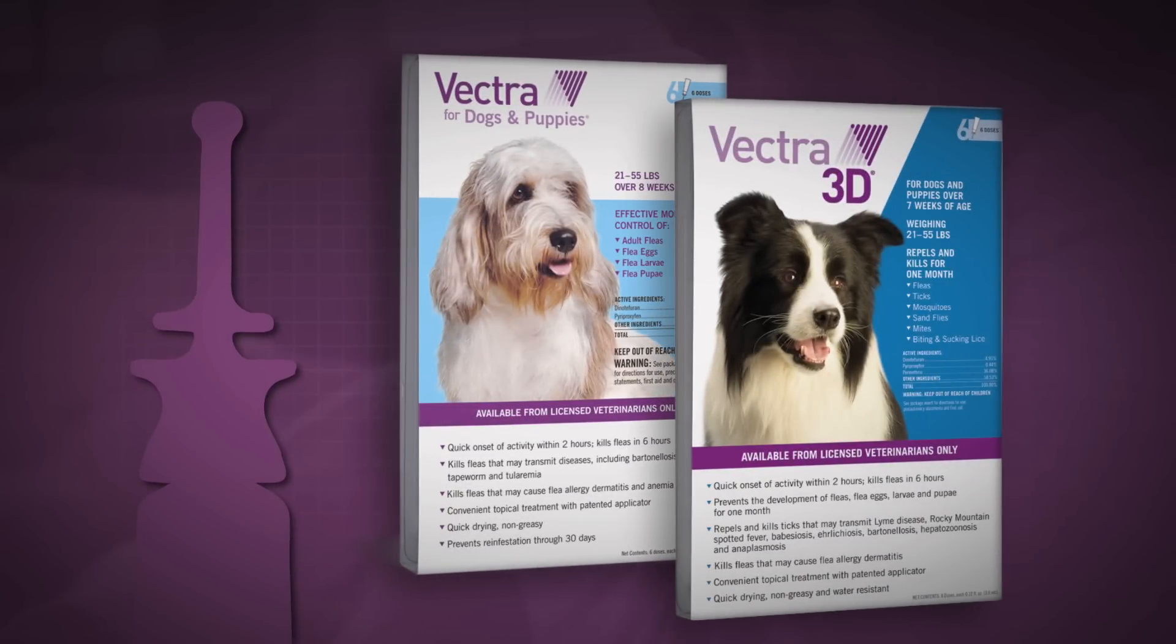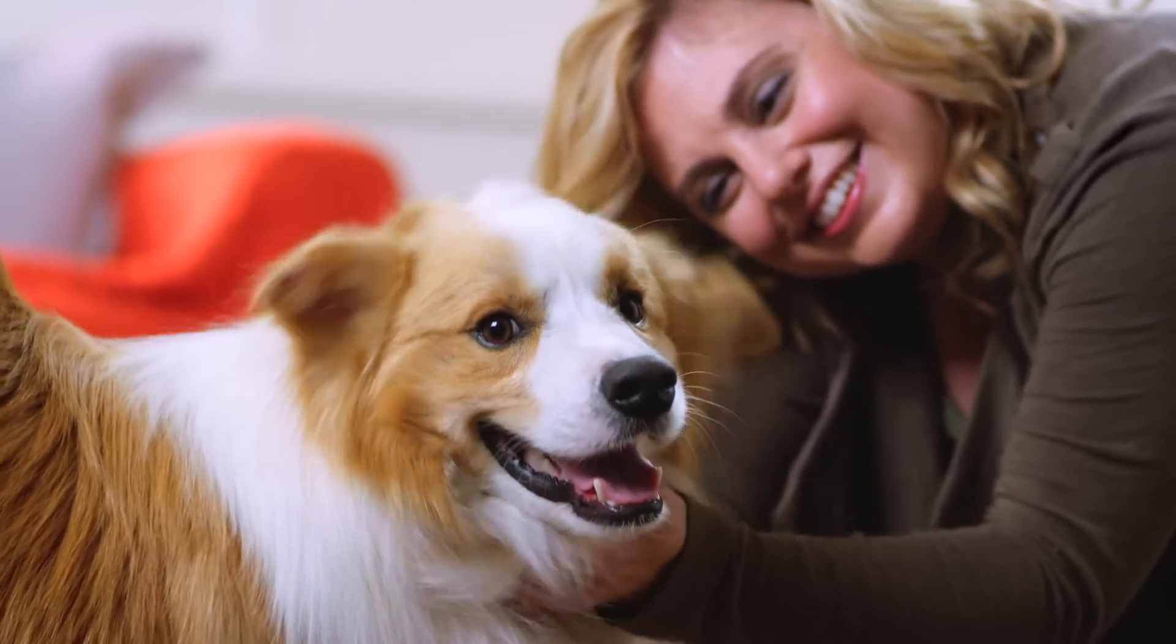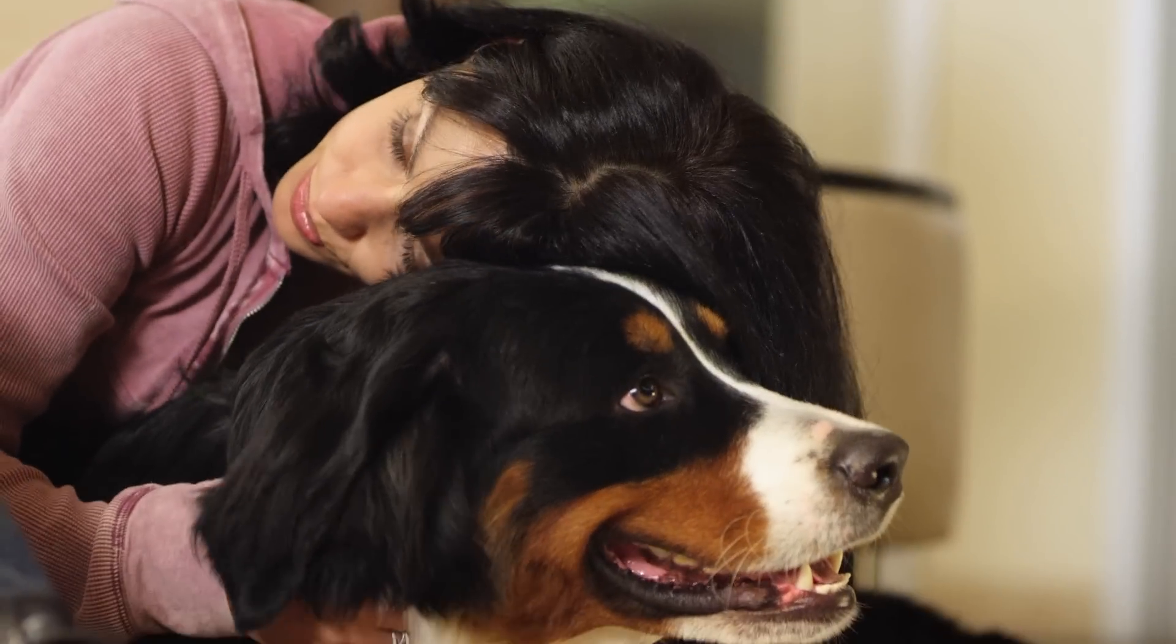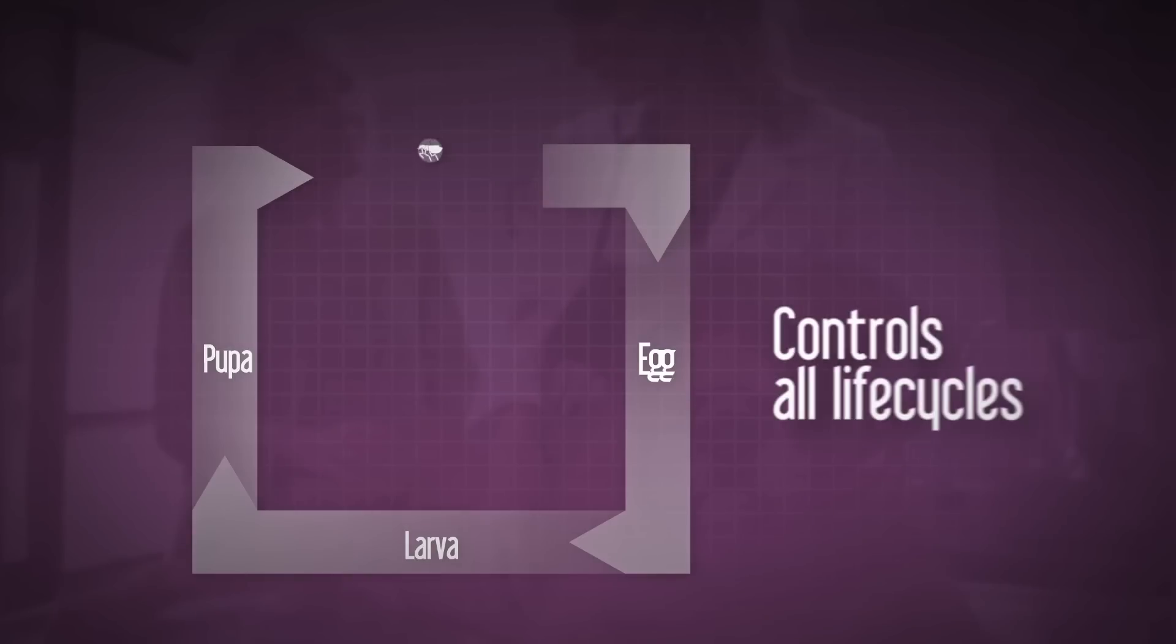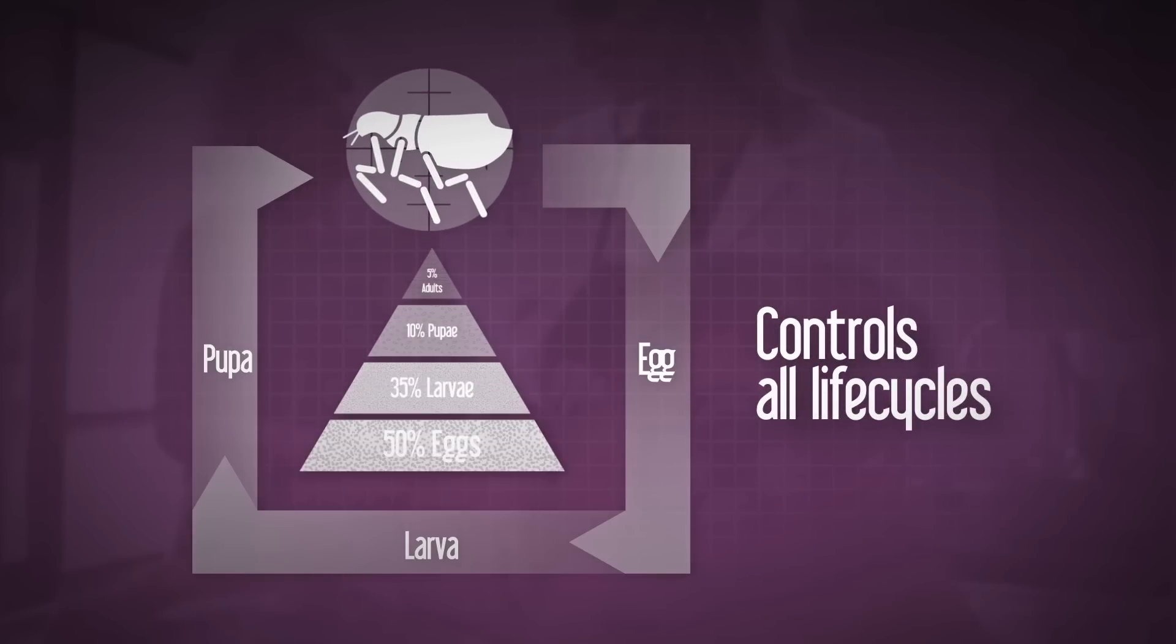These topical parasiticides effectively control dangerous parasites and help reduce the risk of disease. Both Vector Dog and Puppy and Vector 3D kill adult fleas and prevent the development of all immature stages of fleas, including eggs, larvae, and pupae.